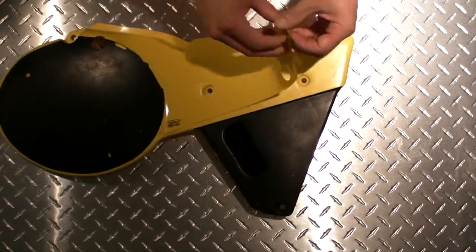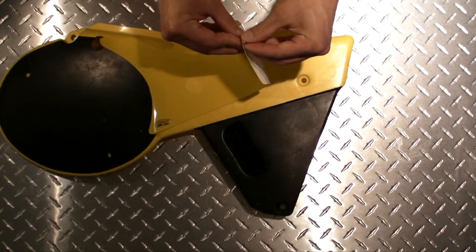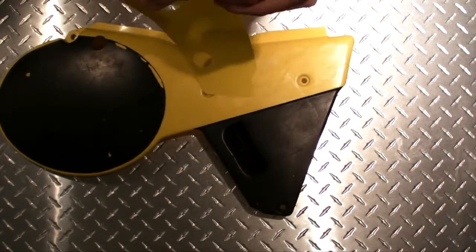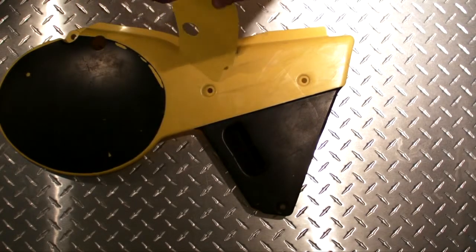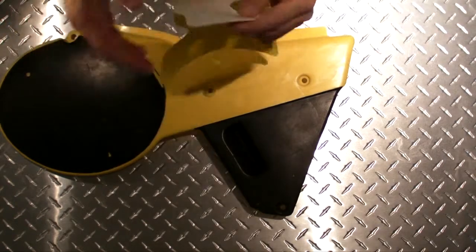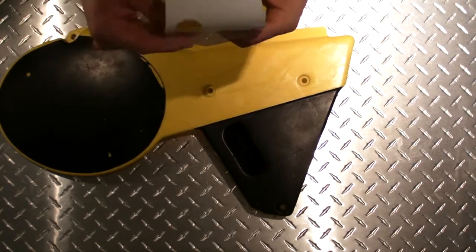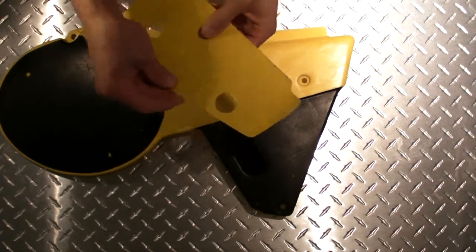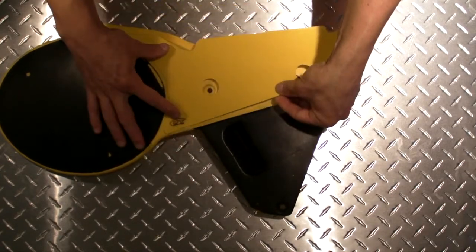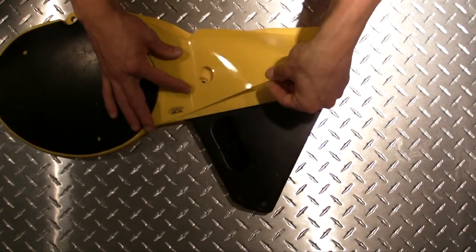First thing we're going to do is we're going to peel back the release liner. I'm not going to peel it back 100%. I'm going to peel it back about maybe 25% and pull it to the side so I can work with it. I'm going to lay down this front portion here.